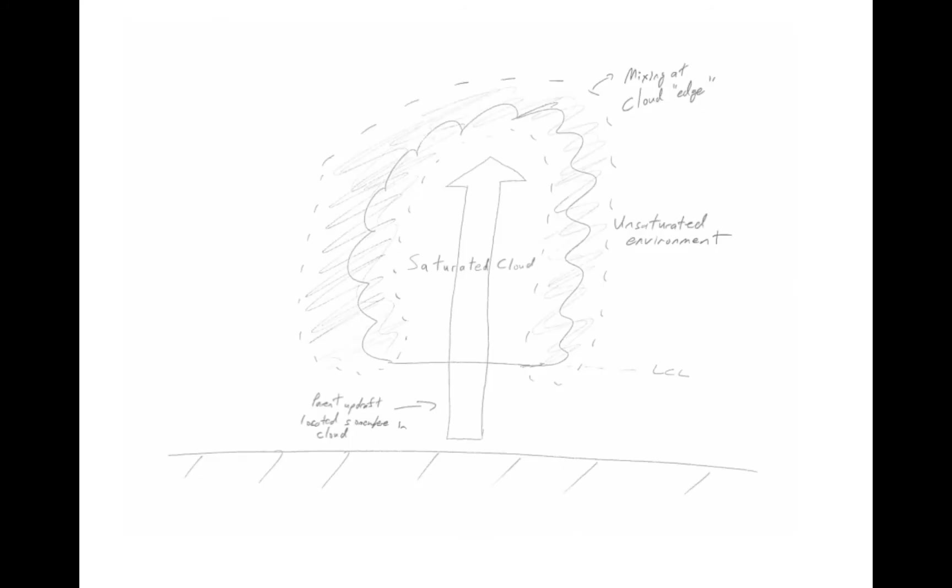Let's take a look next at a very idealized sketch of a cloud. This cloud has a parent updraft that extends through the center of the cloud. The cloud is surrounded by a moist but unsaturated shell where mixing between saturated cloudy air and the unsaturated environmental air occurs.